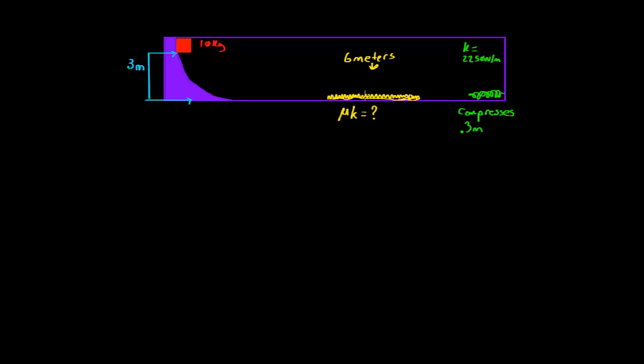So this block is going to slide down. It's going to go through this little rough patch for 6 meters. It's then going to go into this spring, which is going to compress, and then it's going to release the block back again. Now when the block compresses, it's going to compress for 0.3 meters. So the first question is, what is the coefficient of kinetic friction for this little rough patch?